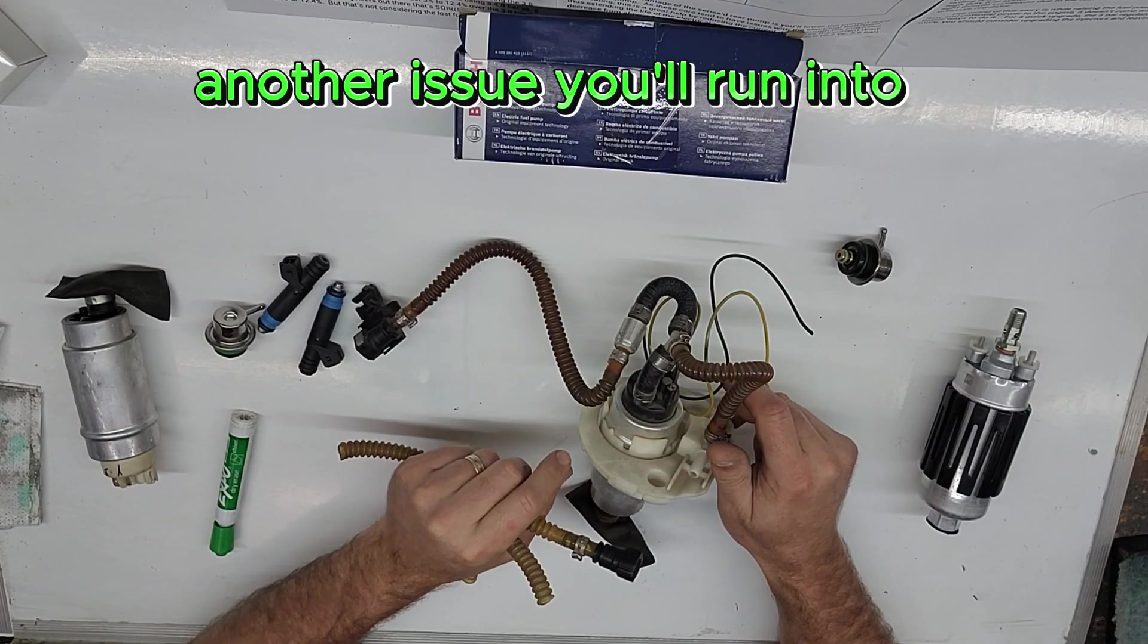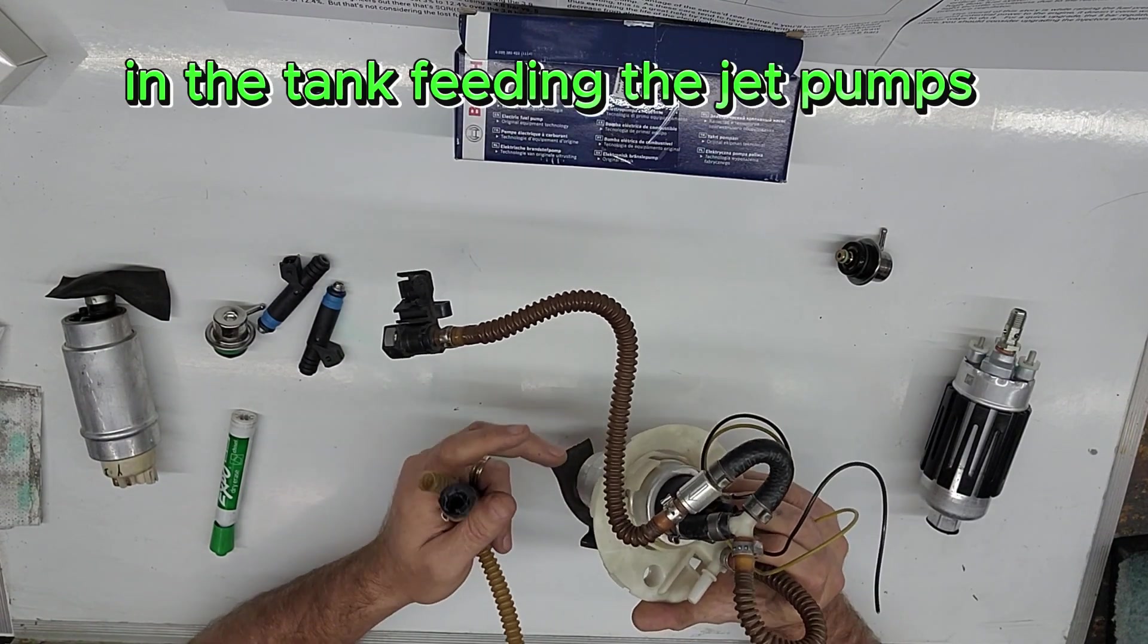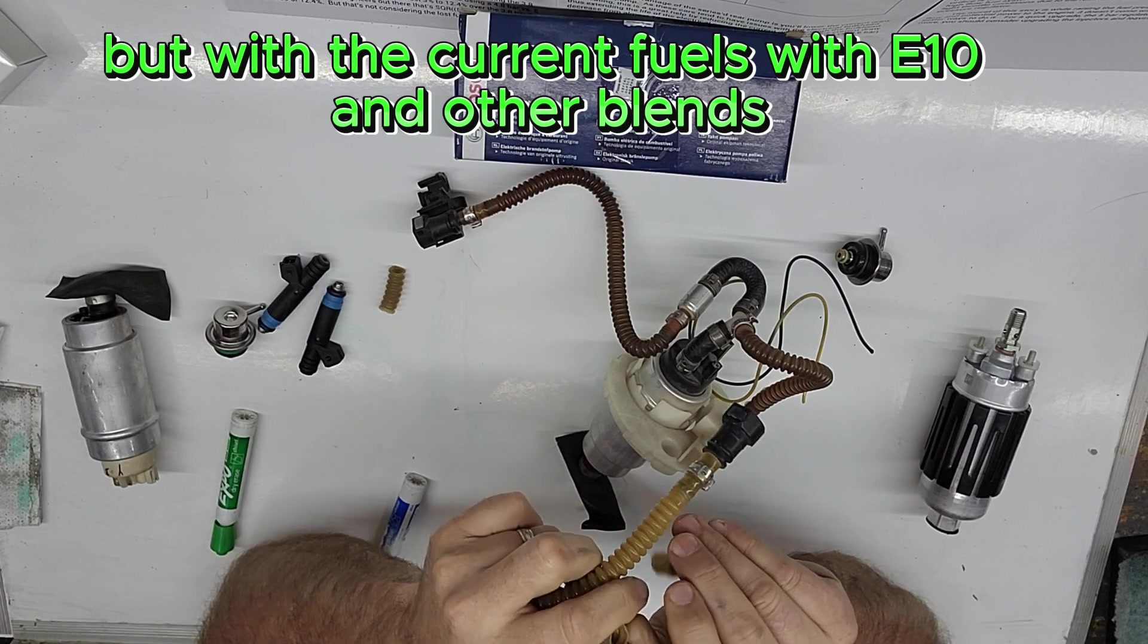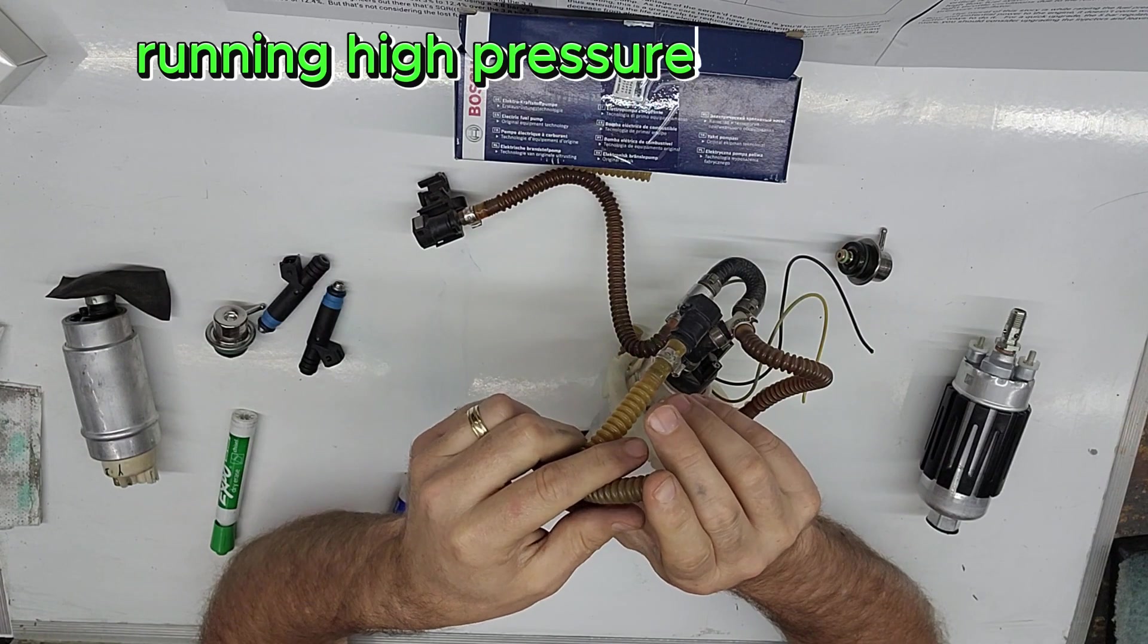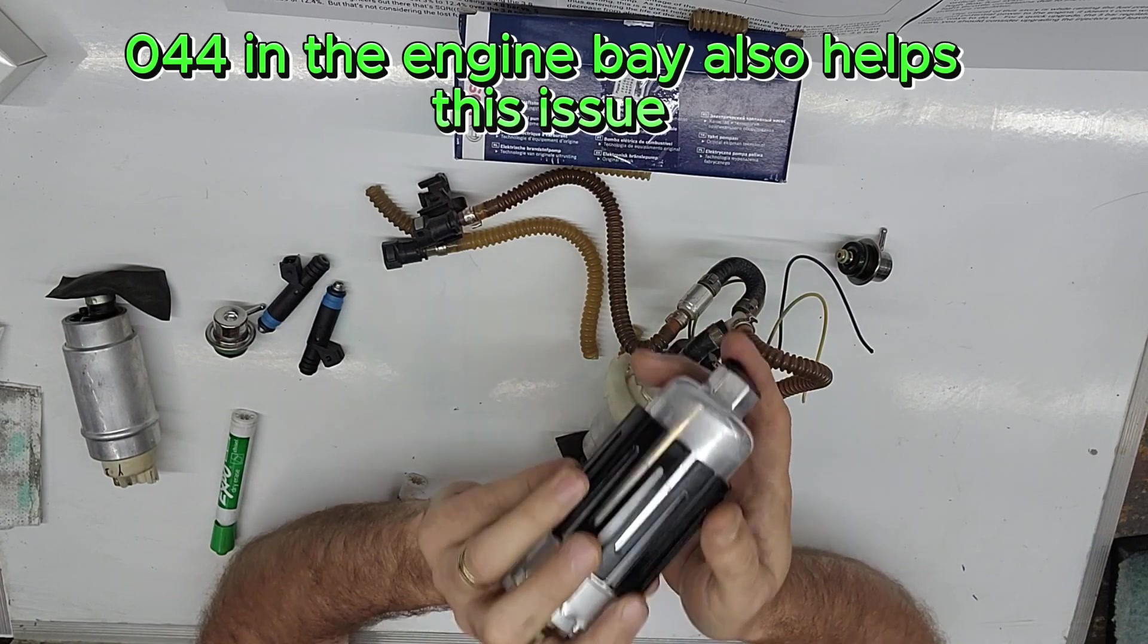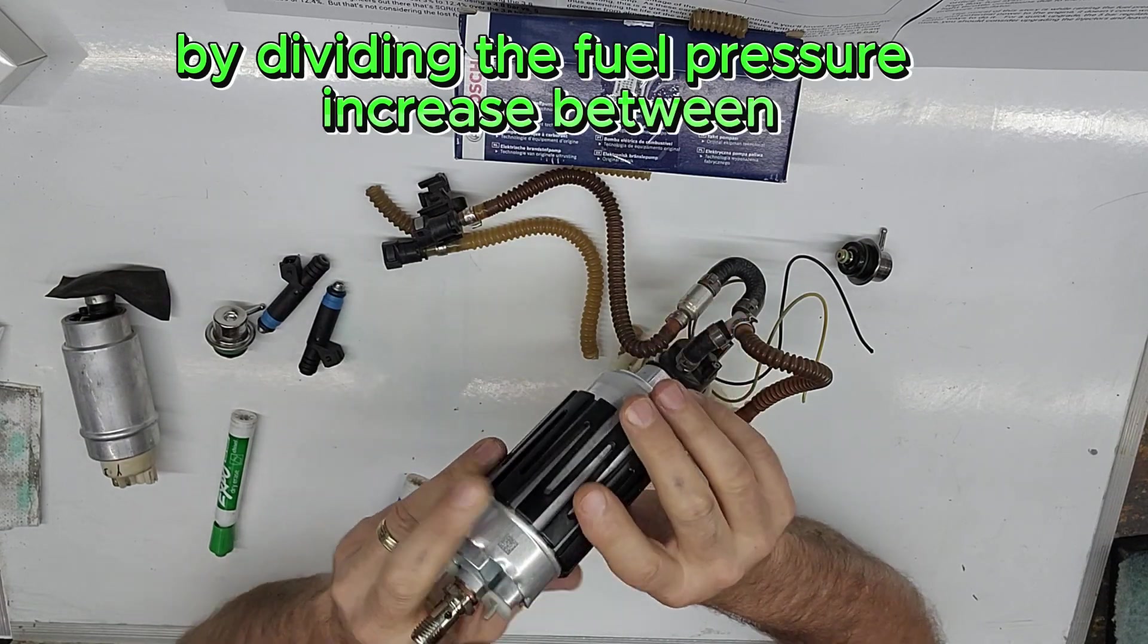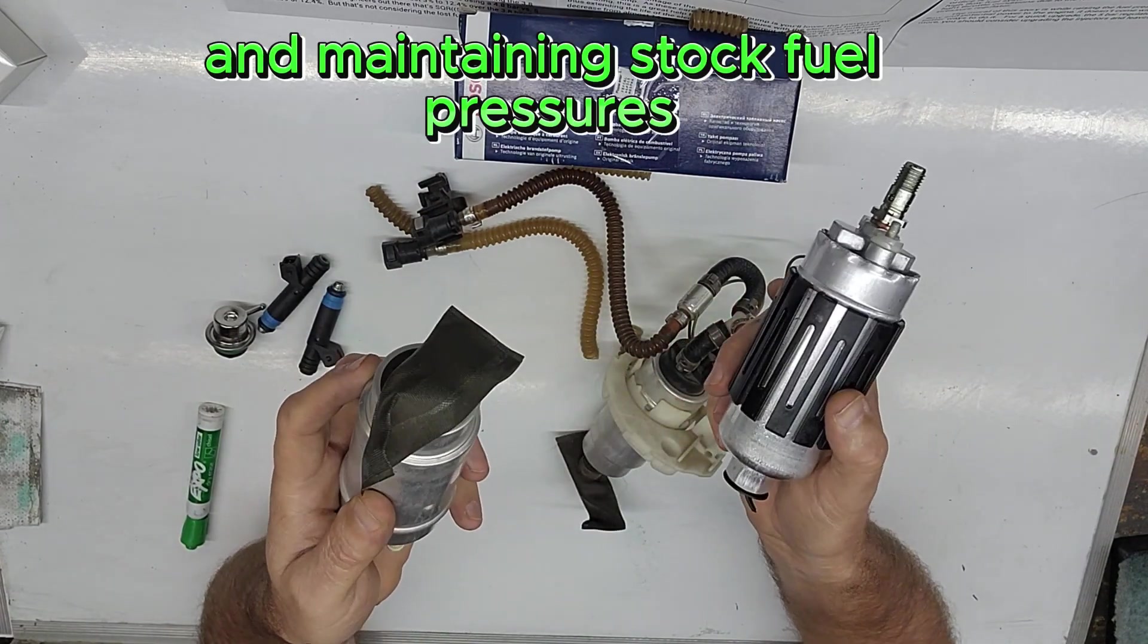Another issue you'll run into running high pressure on the single front pump is with the age of the OEM accordion lines. In the tank feeding the jet pumps, you'll tend to crack or split them. They'll hold plenty of pressure brand new, but with the current fuels with E10 and other blends, it's making them brittle and cracking them. Running high pressures can also cause them to fail prematurely. Using the series 044 in the engine bay also helps this issue with the lower pressure requirement of the front pump by dividing the fuel pressure increase between the two pumps. Either that or running the larger fuel injectors and maintaining stock fuel pressures.